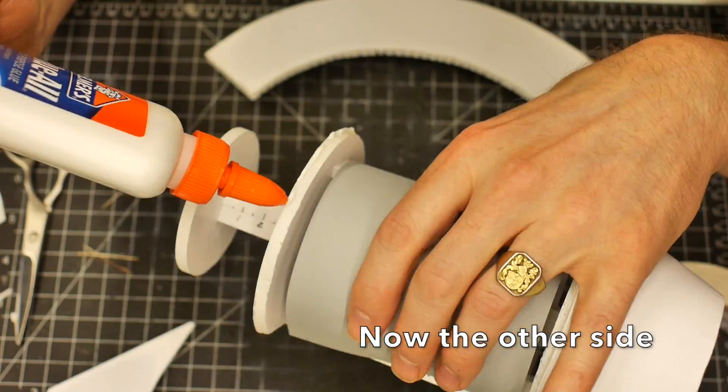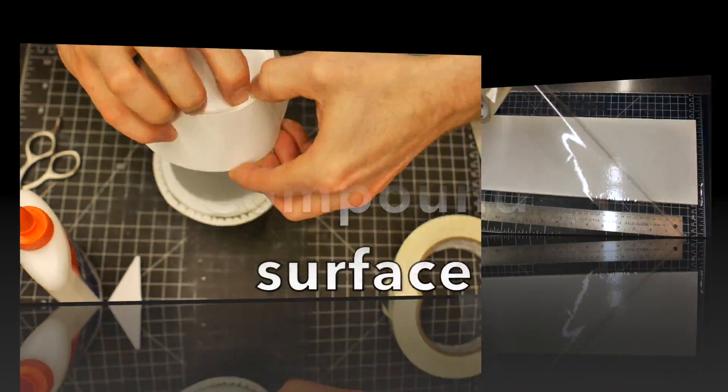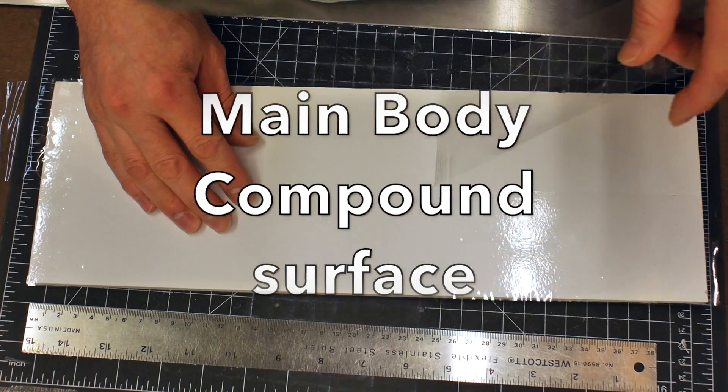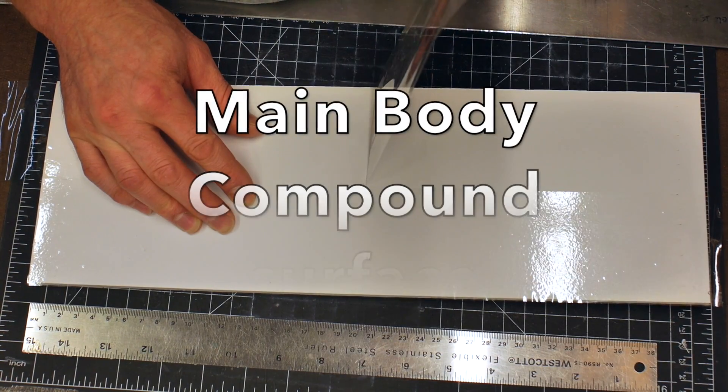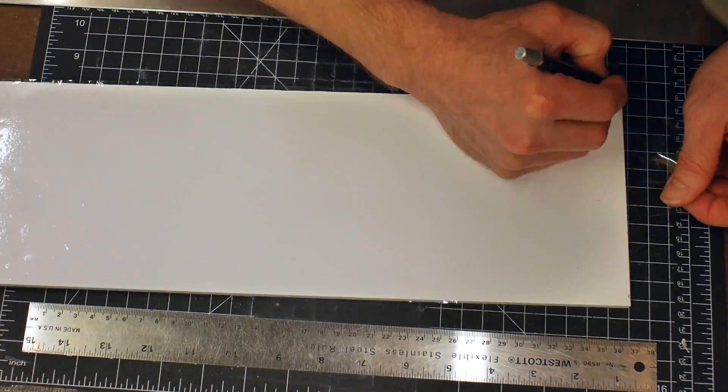Now we're going to move on to the other end and basically repeat the process that we did before. For the main body, we're going to cover our foam core with a piece of packing tape before we start. This is going to give us a glossy surface to simulate a material change.